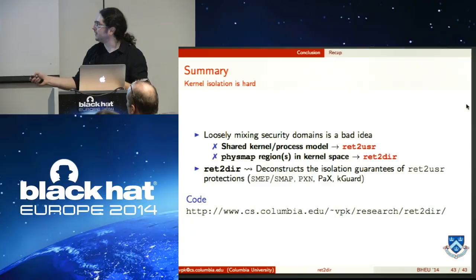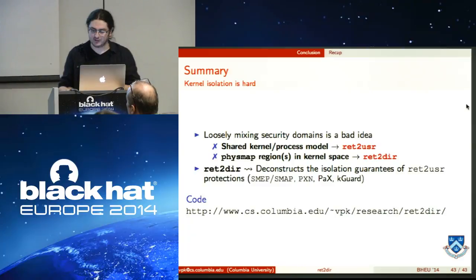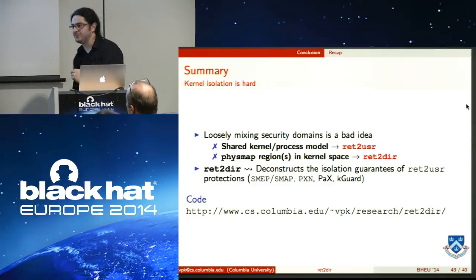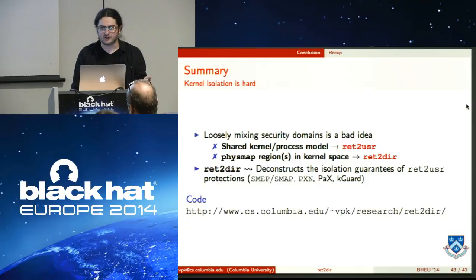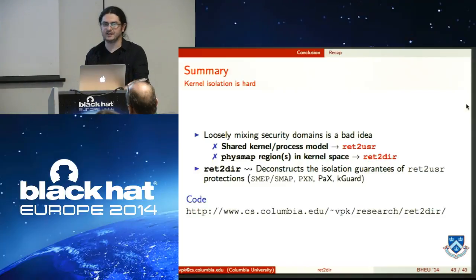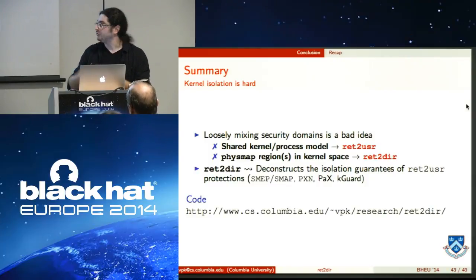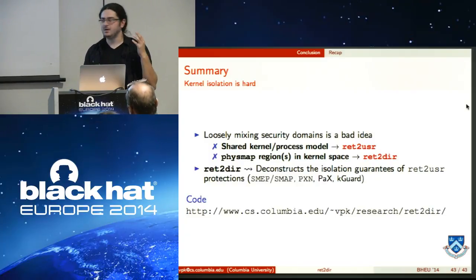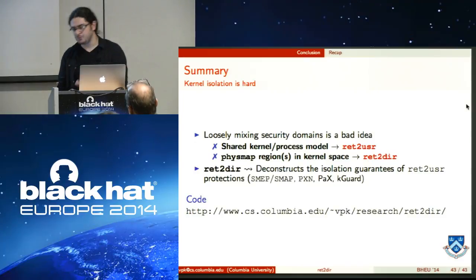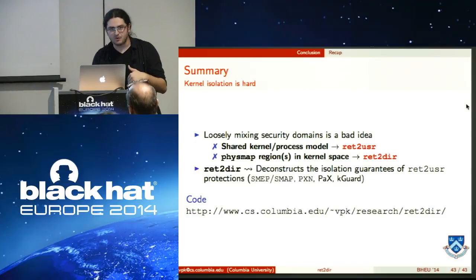We have prepared a set of VMs available at a URL. These VMs come ready with vulnerable kernels and protected kernels, containing the source code of both the original exploits and the Ret2Dir-modified versions. You can download them, run the original exploits on a protected kernel to see them fail, then run our versions to see how we bypass the protections.